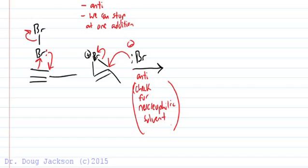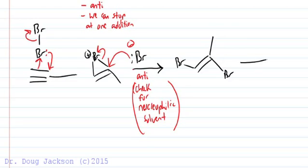So check for that in your given information. What we get is the anti-relationship vicinal dihalide — a 1,2-dihalide, a vinyl dihalide. Then it's just the same as our alkene material. We can do this process again with another bromine molecule.